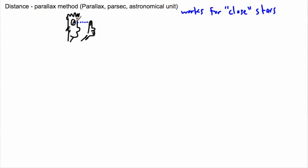With one eye closed — it doesn't matter which eye — line up your thumb with some object in the background, like a door handle. It's important to have something in the distance as a reference. Hold out your thumb at arm's length, close one eye, and line it up. Now, without moving your thumb, switch which eye is closed. Your thumb will appear to have jumped. That's because of trigonometry, and you've just experienced parallax.